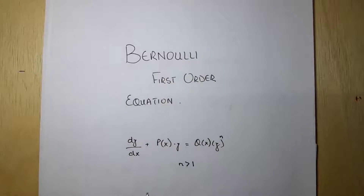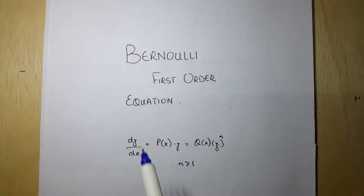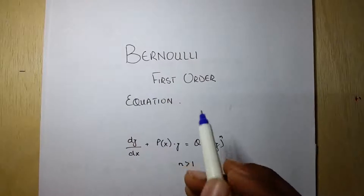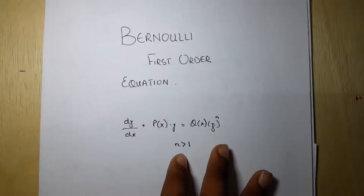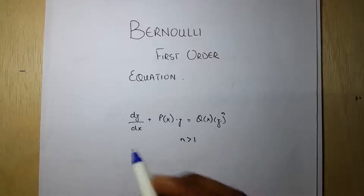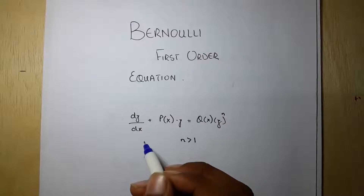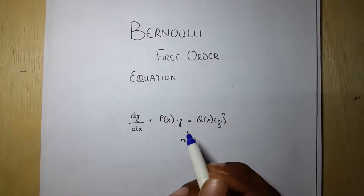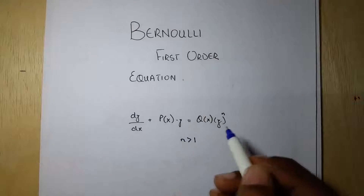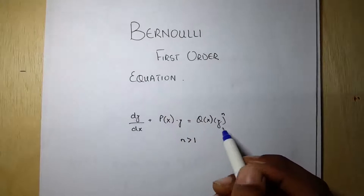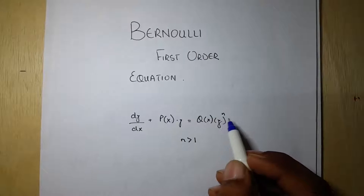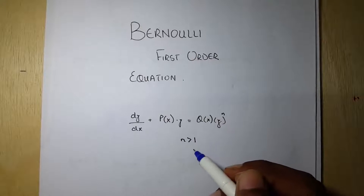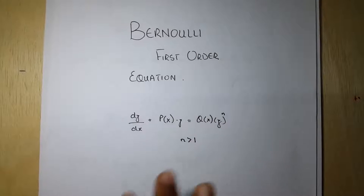In this video, I will show you how to solve a Bernoulli first order differential equation. The form of a Bernoulli first order differential equation is dy/dx plus a function of x times y, equal to a different function of x times y to the power n, where n is always greater than 1.